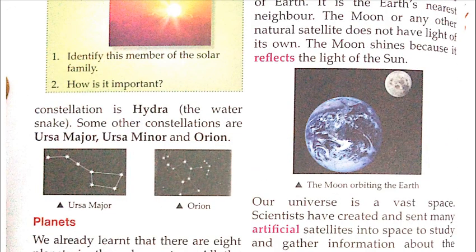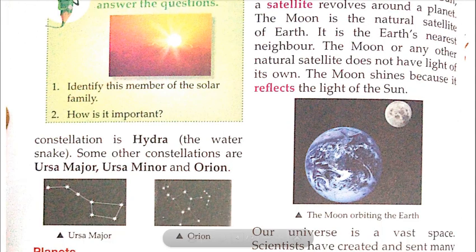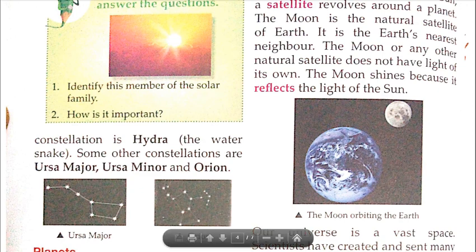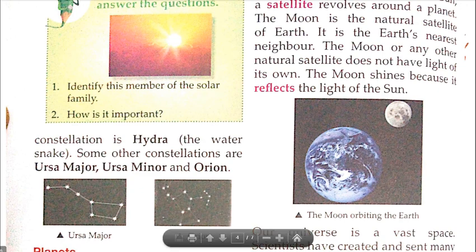These clusters of stars are called constellations — taaron ke samuh ko jo dekhke aapko lagta hai ki koi pattern ban raha hai, inhe constellations bolte hain. The largest constellation is Hydra, the water snake. Some other constellations are Ursa Major, Ursa Minor, and Orion.